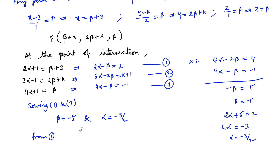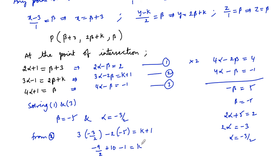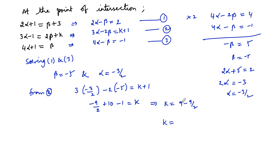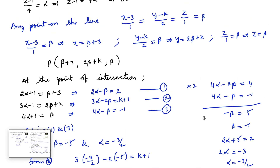Now substitute α = −3/2 and β = −5 into equation 2: 3×(−3/2) − 2×(−5) = k+1, which gives −9/2 + 10 = k+1, so 11/2 − 1 = k, therefore k = 9/2. The value of k for which the two lines intersect is 9/2.